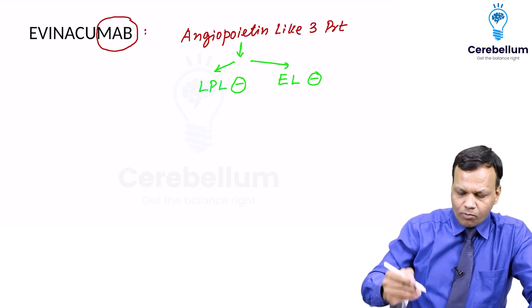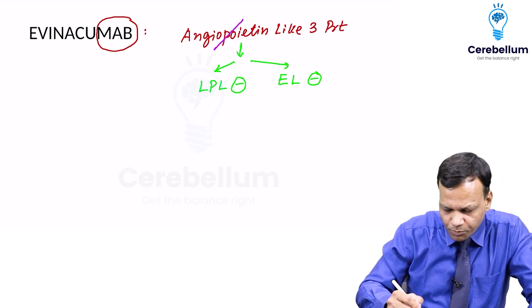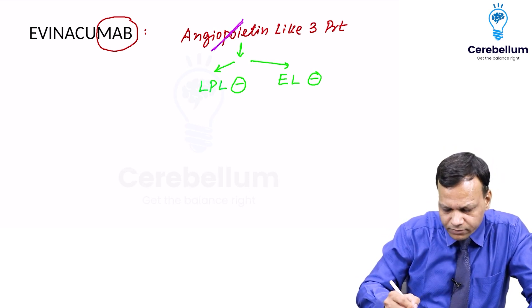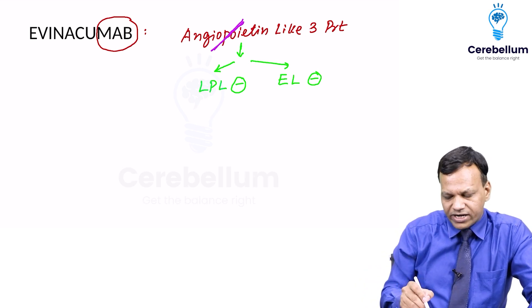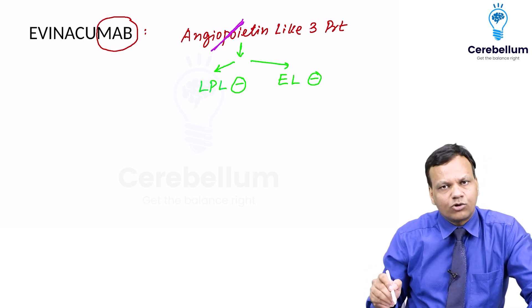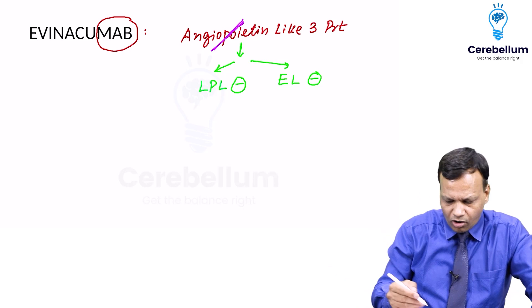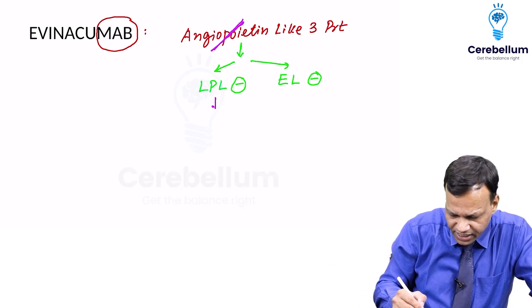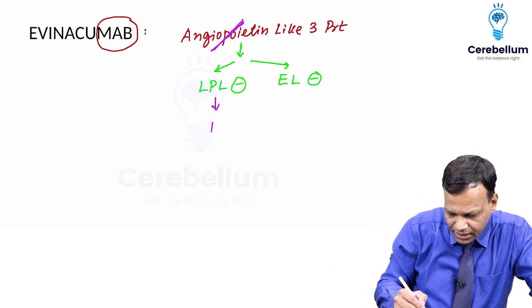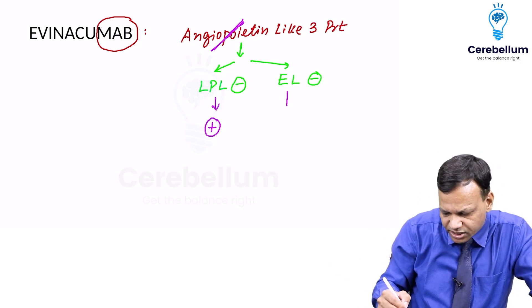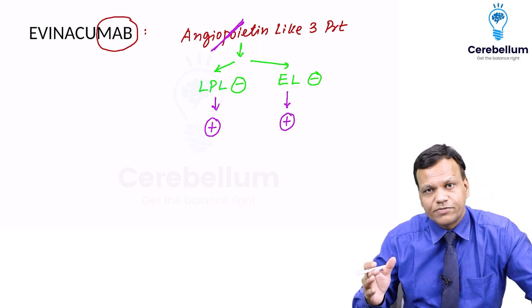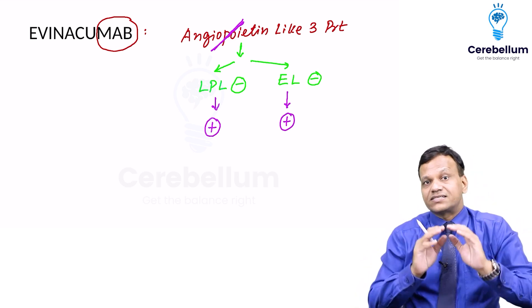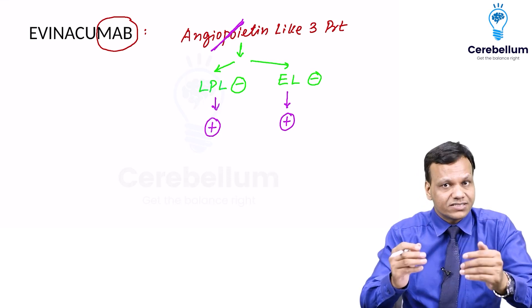Avenacumab inhibits the action of Angiopoietin-like protein. When this is inhibited, that means lipoprotein lipase and endothelial lipase cannot be inhibited — in other words, Avenacumab results in stimulation of these two enzymes. And when these two enzymes are stimulated, that results in metabolism of lipids.